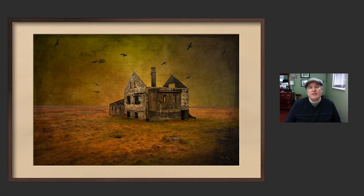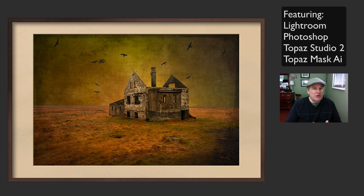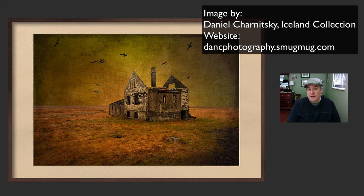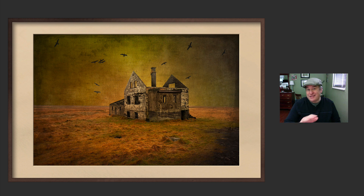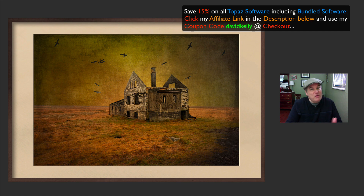Hello, everyone. Welcome to the Joy of Editing with Dave. On today's episode, we're going to make this image right here. A lot of textures on it. I use Topaz Studio 2, Topaz Mask AI, Denoise AI, Sharpen AI, and also Photoshop. This image was quite a ride. It comes to me from Daniel Charnitsky — I'll link his website in the description below. His Iceland images are amazing and this image came from his Iceland collection. You're going to learn a lot in this tutorial, so stay tuned the whole way till the end. Without any further ado, let's make this image.